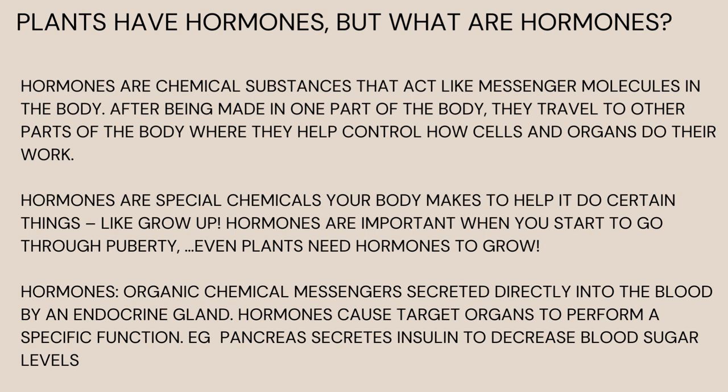When we look at the different hormones found in plants, we will also look at where they are produced, because in plants they are produced at a specific region and bring about change in that specific region, not the whole plant. If the hormone is produced in the roots, it will bring changes in the roots. If it is produced at the tip of the stem, it brings changes at the tip of the stem. That is the difference between plant hormones and human hormones — human hormones bring about action all over the body, but in plants only a specific region reacts.